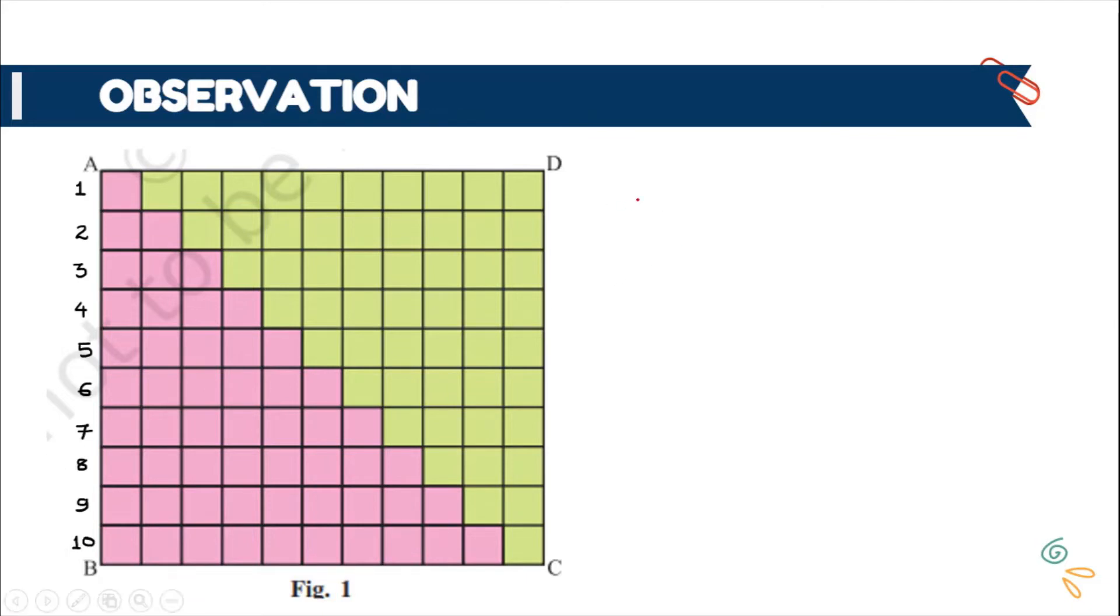So these lengths give a pattern of 1, 2, 3, likewise up to 10. Can you tell me whether it is an AP or not? Surely, it is an AP where the first term is 1, and the common difference D is 1, the difference between consecutive terms is 1.